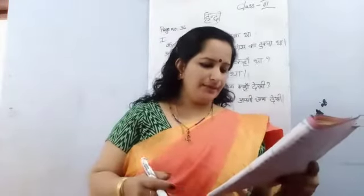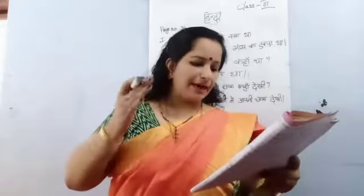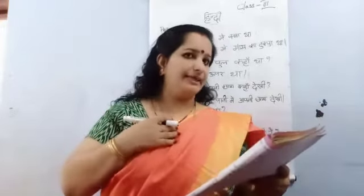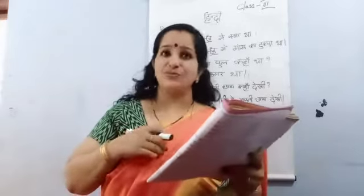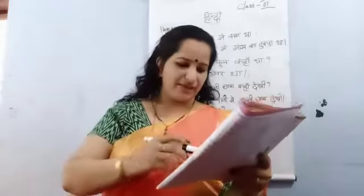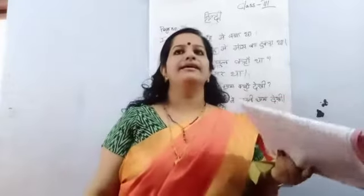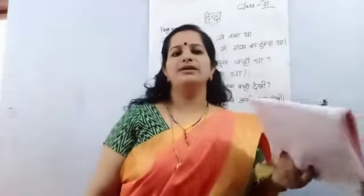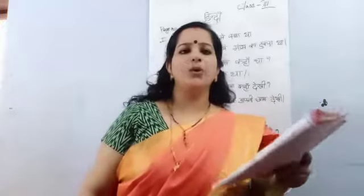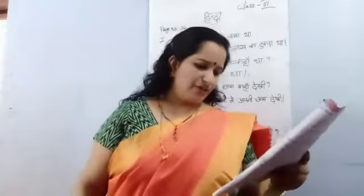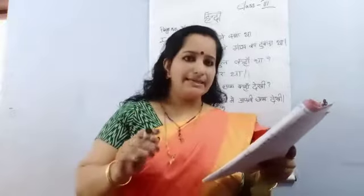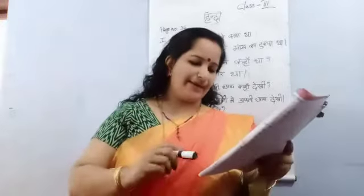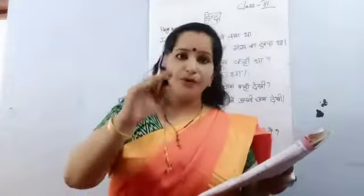First one. Ka raaste mein ek nadidhi. Is it right or wrong? Yes, it is very correct. Raaste mein ek nadidhi — there was a river on his way. He saw a river on his way. Is it right? It is right. Okay, you have to put tick in this column.